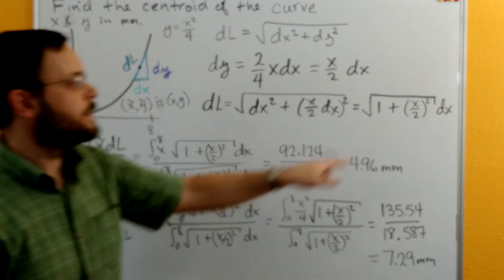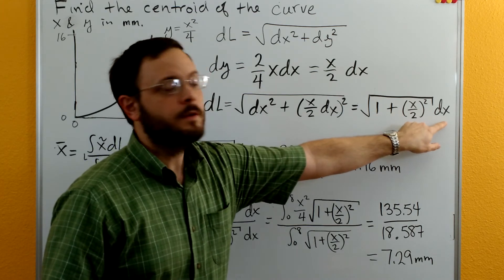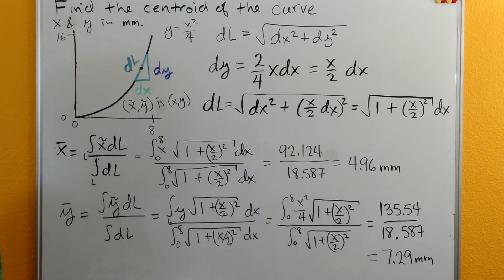We have 1 plus x over 2 the quantity squared and then the square root of that and then the dx sits outside of the square root now.